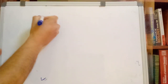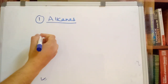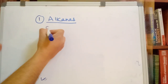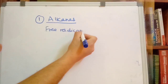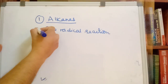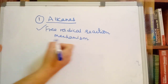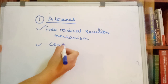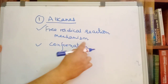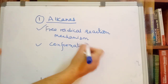I am going to talk about the Alkane chapter, which is important. In the Alkane chapter, I am going to talk about the free radical reaction mechanism. The free radical reaction mechanism covers the concept of isomers. The isomers relate to sigma bond rotation conformations.